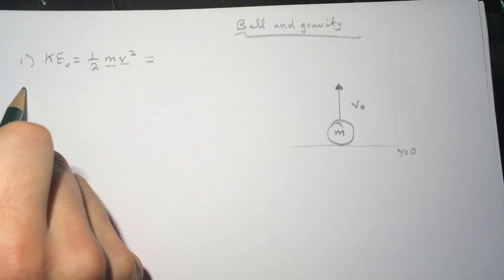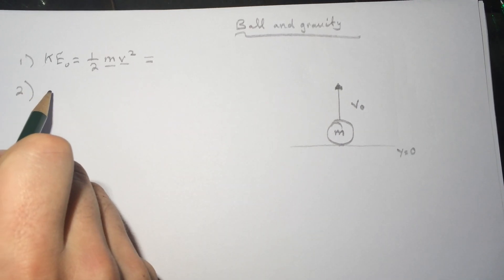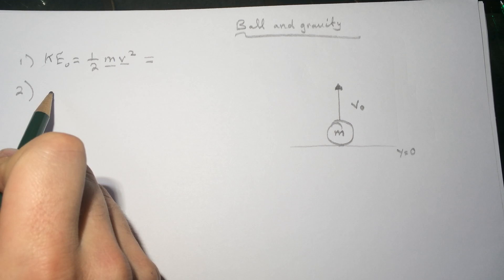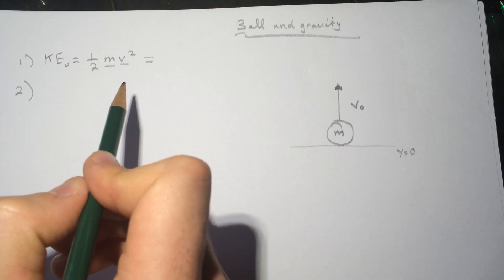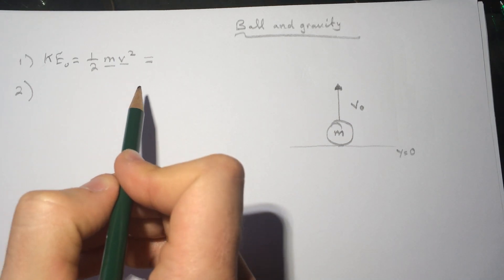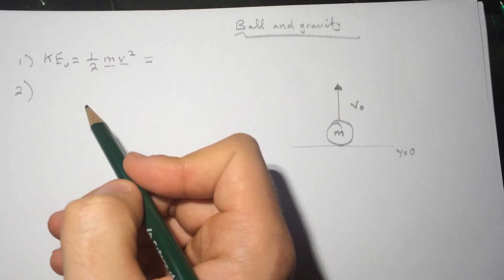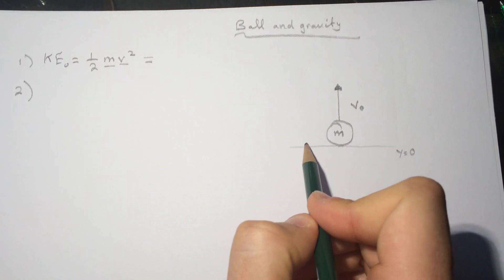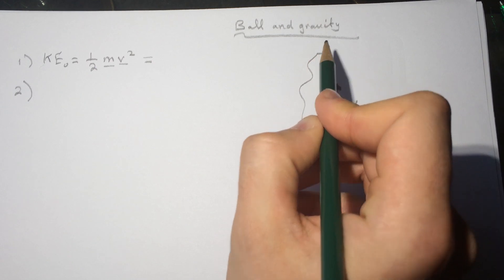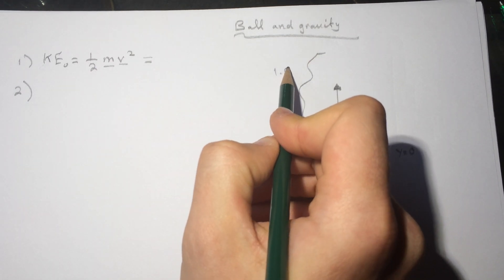Question number two is asking how much work does the gravitational force on the ball if it goes up to height of h = 1.9. So if the ball went up 1.9, let's call